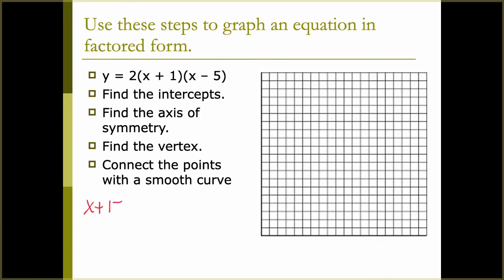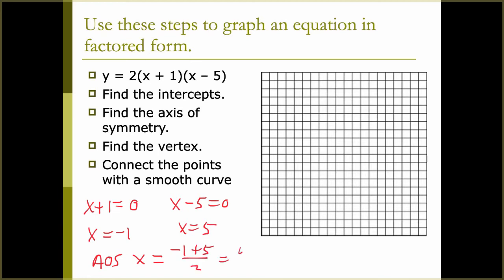If we have x plus 1 equals 0, we find x is negative 1 — notice the opposite sign. x minus 5 equals 0 gives us x is 5. So we know we cross the x-axis at negative 1 and 5, and our graph opens up. The axis of symmetry is halfway between our intercepts, so we find the average: x equals negative 1 plus 5 divided by 2, which is 4 over 2, which is 2. Our AOS is x equals 2.